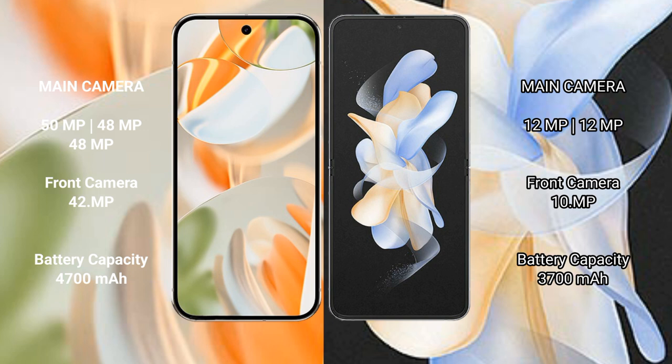Samsung Galaxy Z Flip 4 rear camera features a dual camera setup: 12MP main and 12MP ultrawide, with a 10MP front camera. Google Pixel 9 Pro packs a 4,700mAh battery with 27W fast charging support. Samsung Galaxy Z Flip 4 has a 3,700mAh battery with 25W fast charging support.